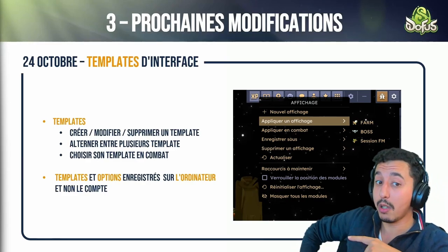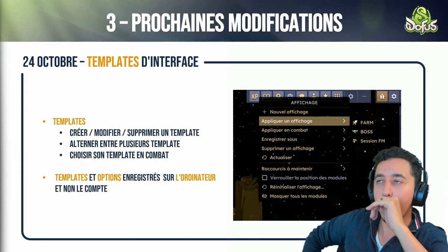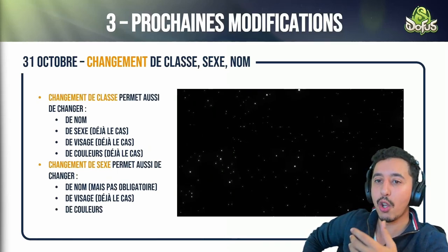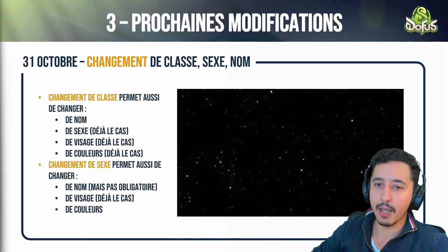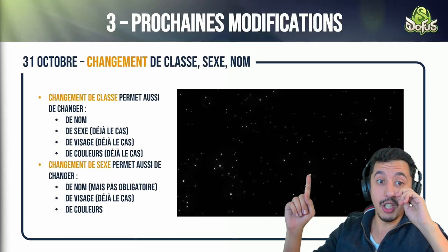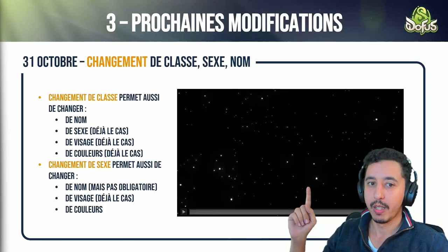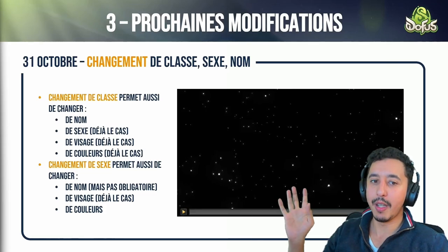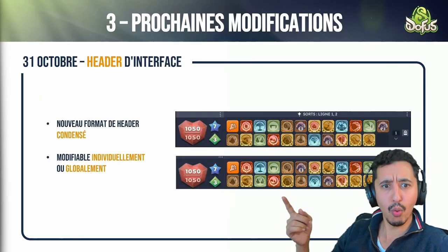This is the delivery we're talking about for tomorrow, but there are other timings and we still have loads of things to bring to you. For example, October 31st is a big topic: class change, sex change, and name change — these three changes without having to disconnect and reconnect.